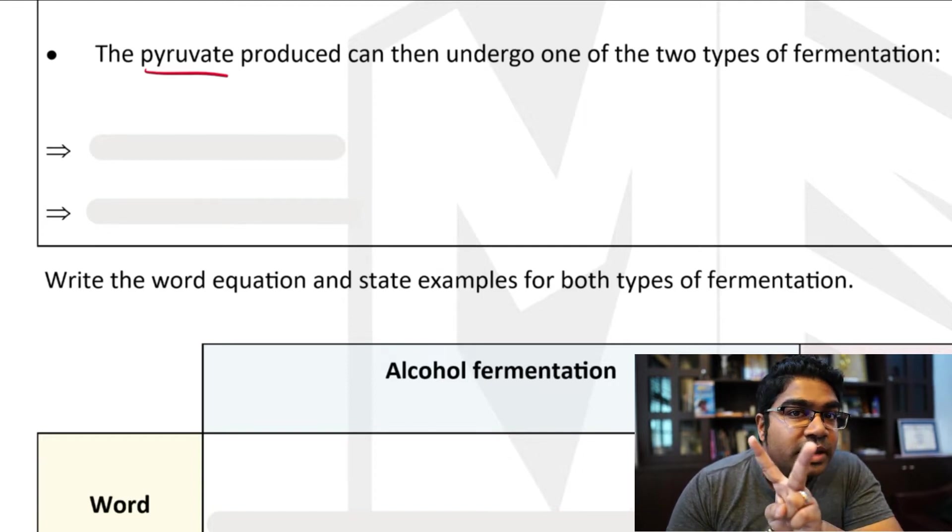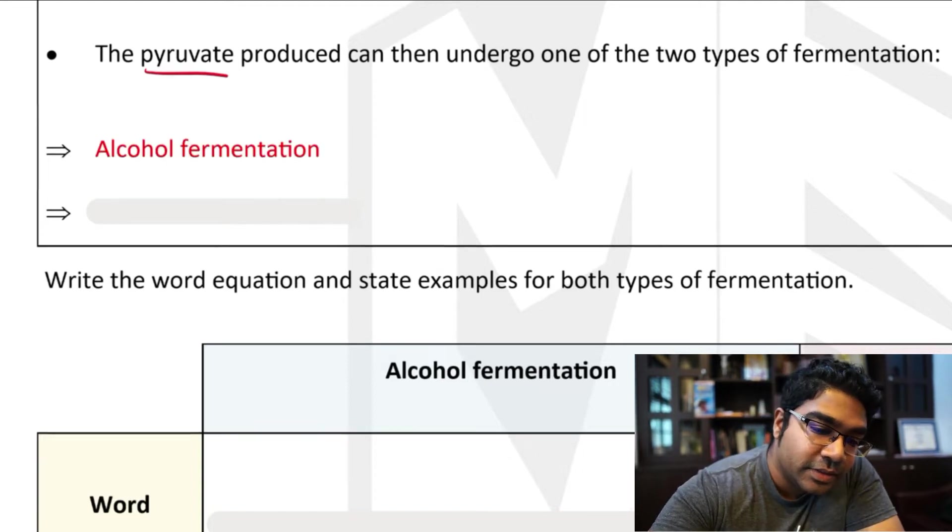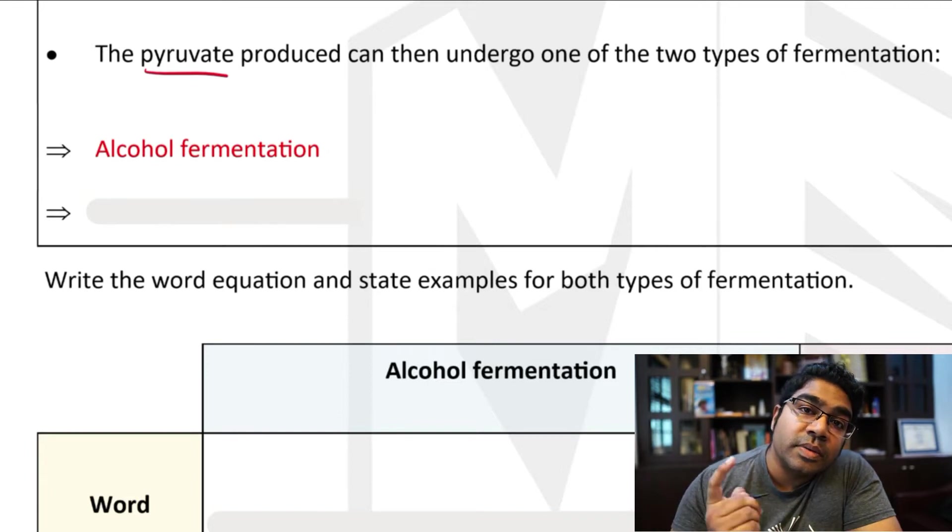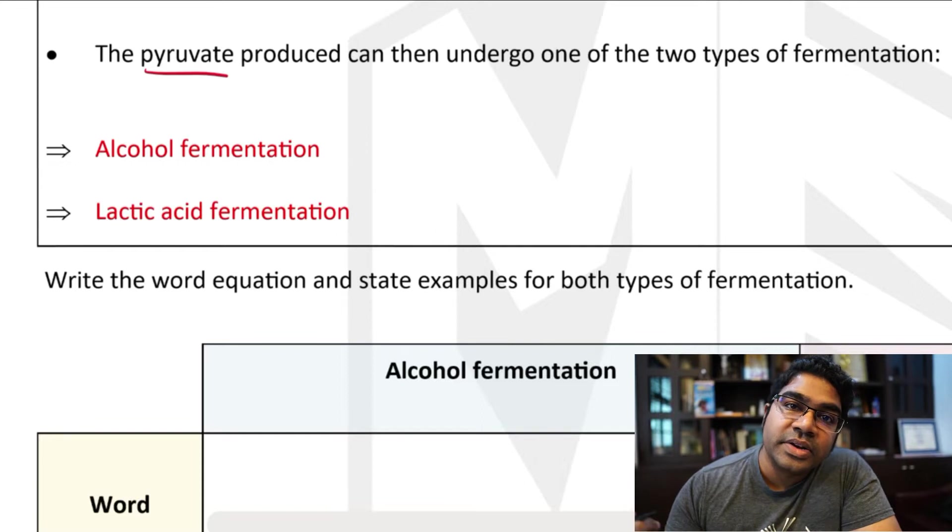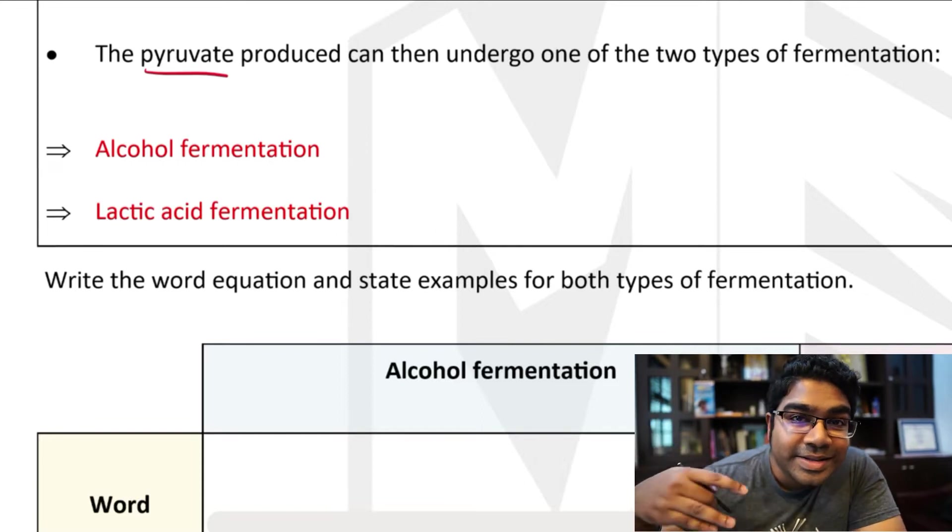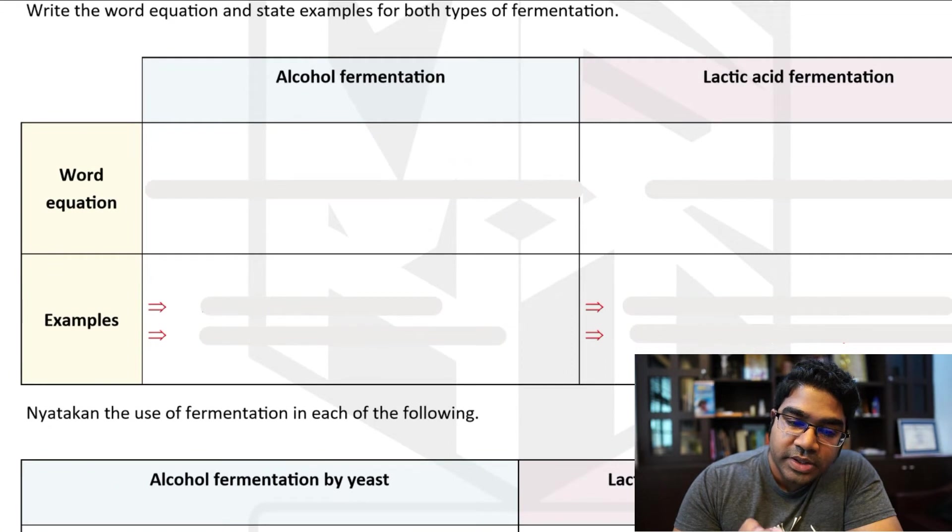We are only going to look at the two types in this video: alcohol fermentation, production of alcohol, and lactic acid fermentation, which produces lactic acid. So there are two types of fermentation here, alcohol and lactic acid fermentation.